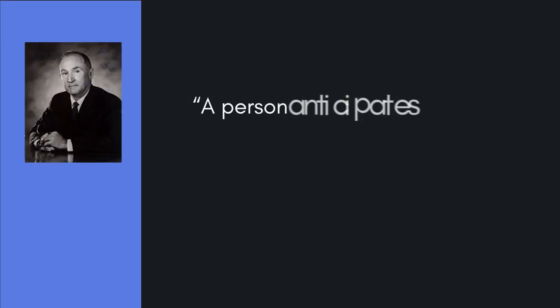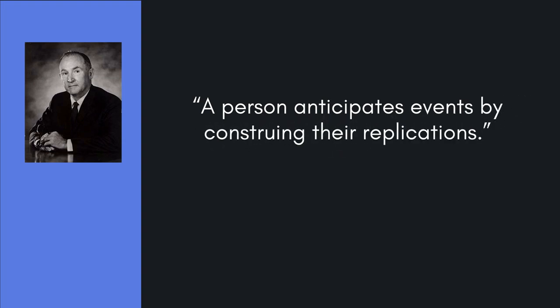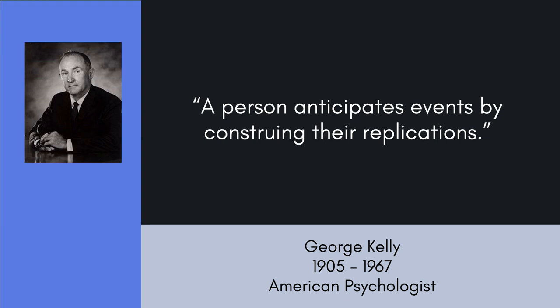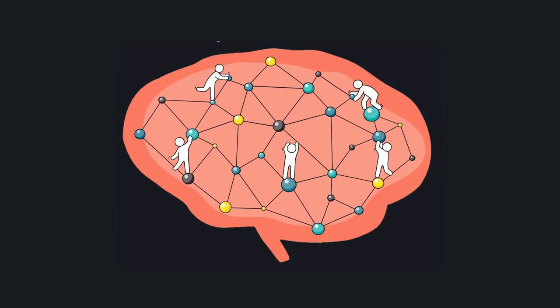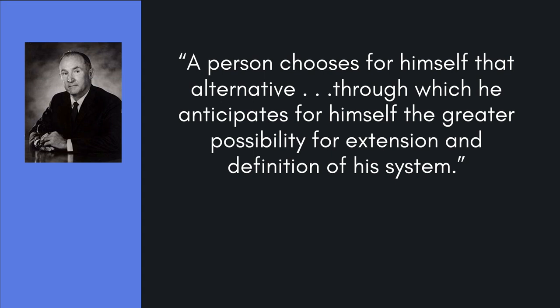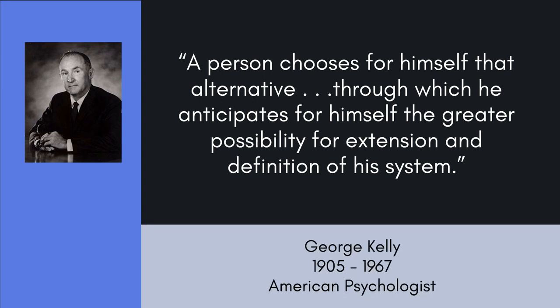According to Kelly, each of us constructs a mental framework of how we think the world works. We start by learning bits of knowledge, and then connect these bits of information together into a framework. We do this by noticing patterns and replications, and then use this framework to anticipate and make guesses about new things we encounter. More developed mental frameworks involve more complex networks with connections going all over the place. Even though Kelly was writing 70 years ago, it is amazing how compatible his ideas are with modern neuroscience. We choose to move in one direction rather than another if we anticipate that a particular direction will extend and define our existing mental framework. It is anticipation that propels us forward.